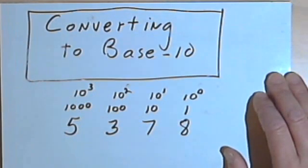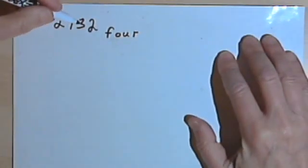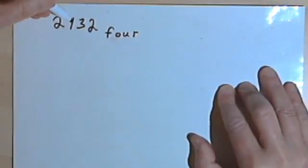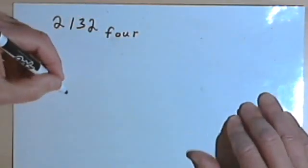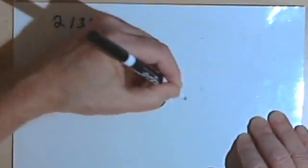So let's take that information and convert from some other base into base-10. So here I've got the number 2132 base-4. I'm not saying 2,132, because numbers like 2,000 and 100 are base-10 numbers. So we'll just call this 2132 base-4. I'm gonna write those numbers again with a little more room between them, 2132.